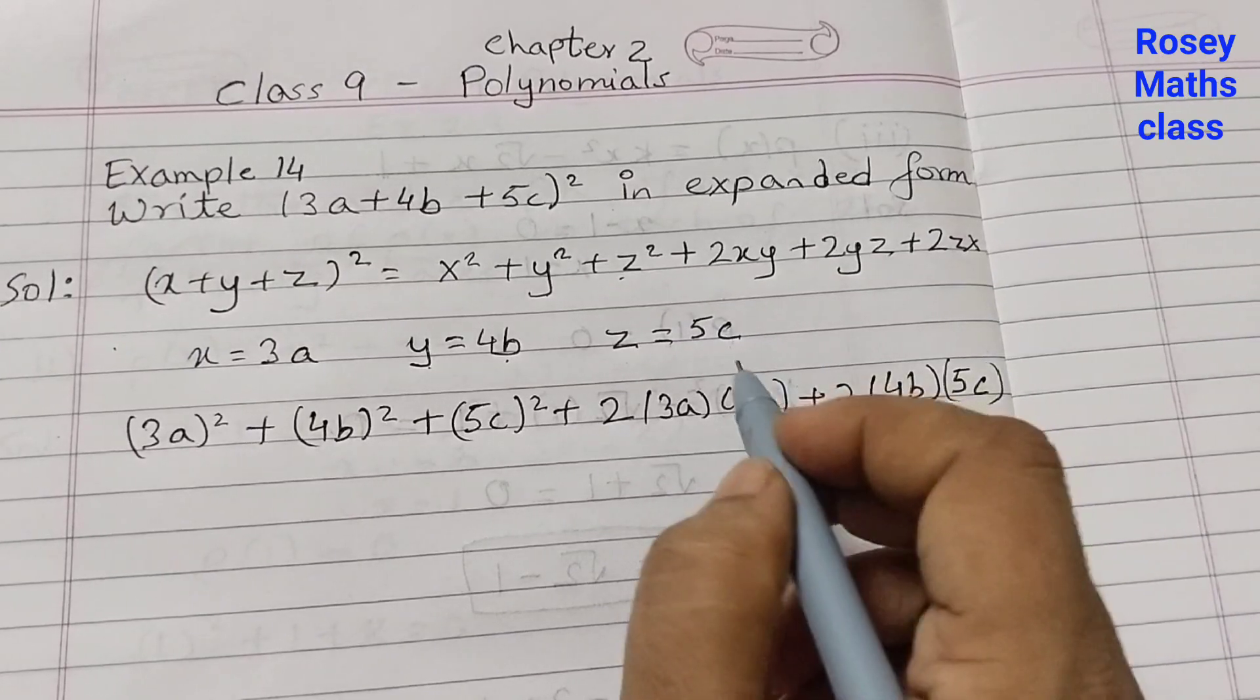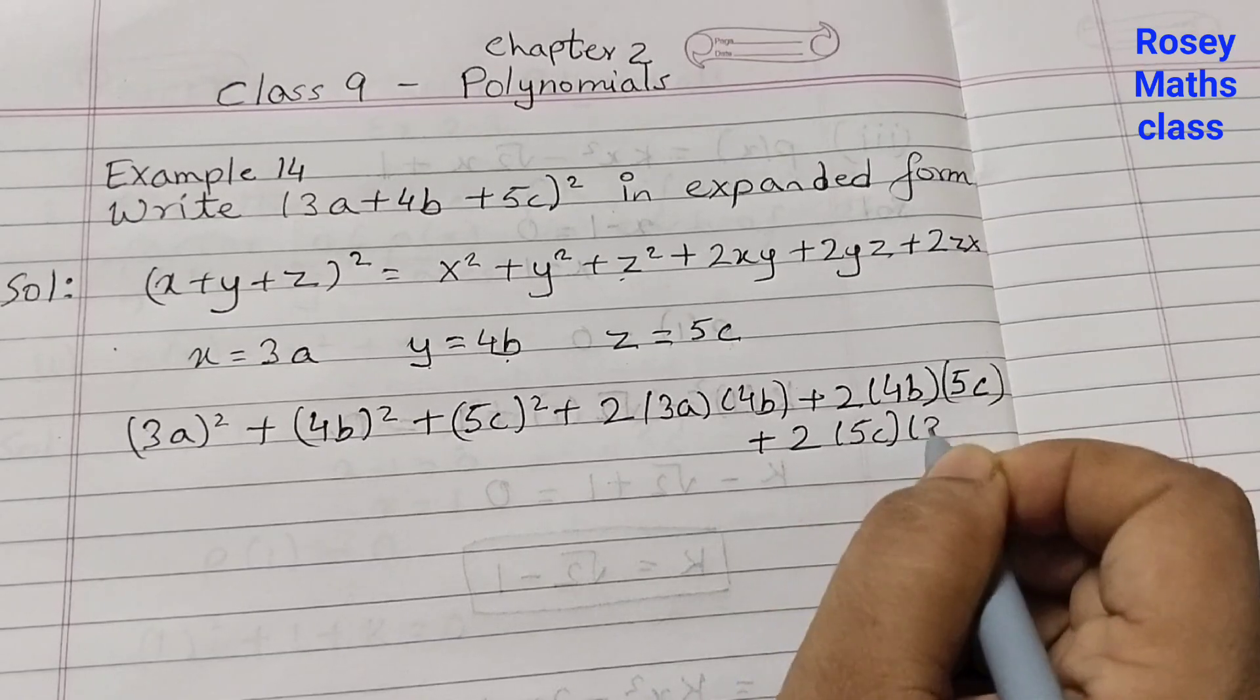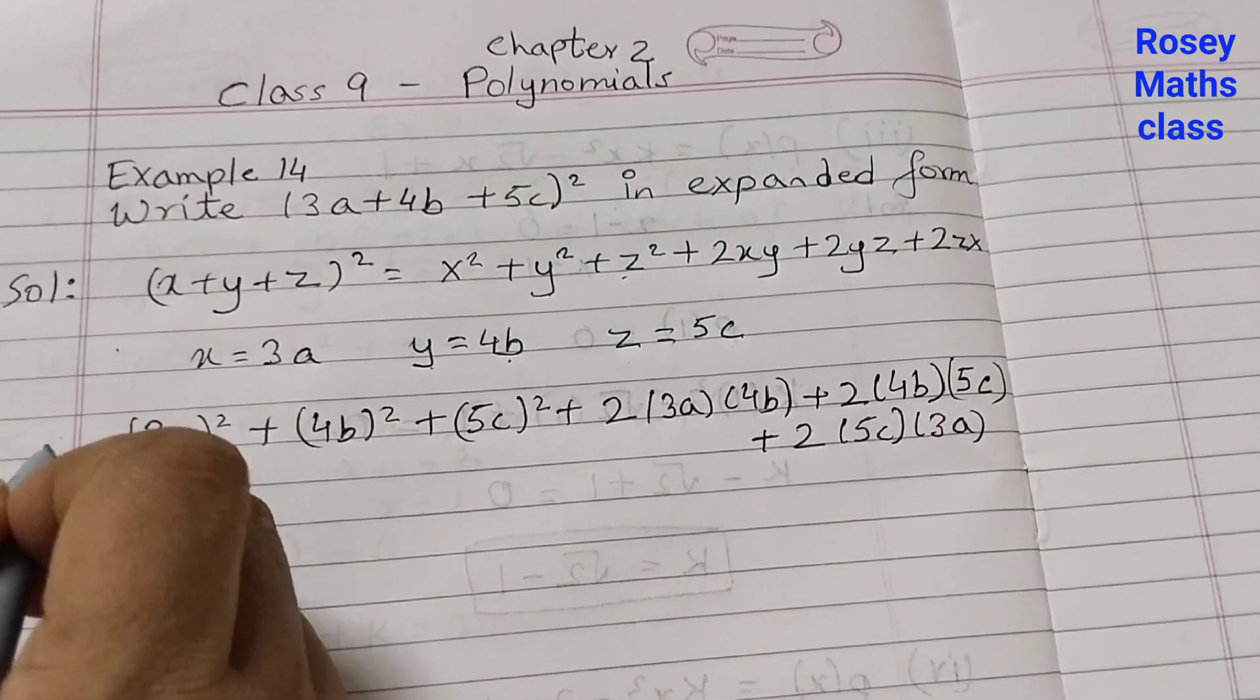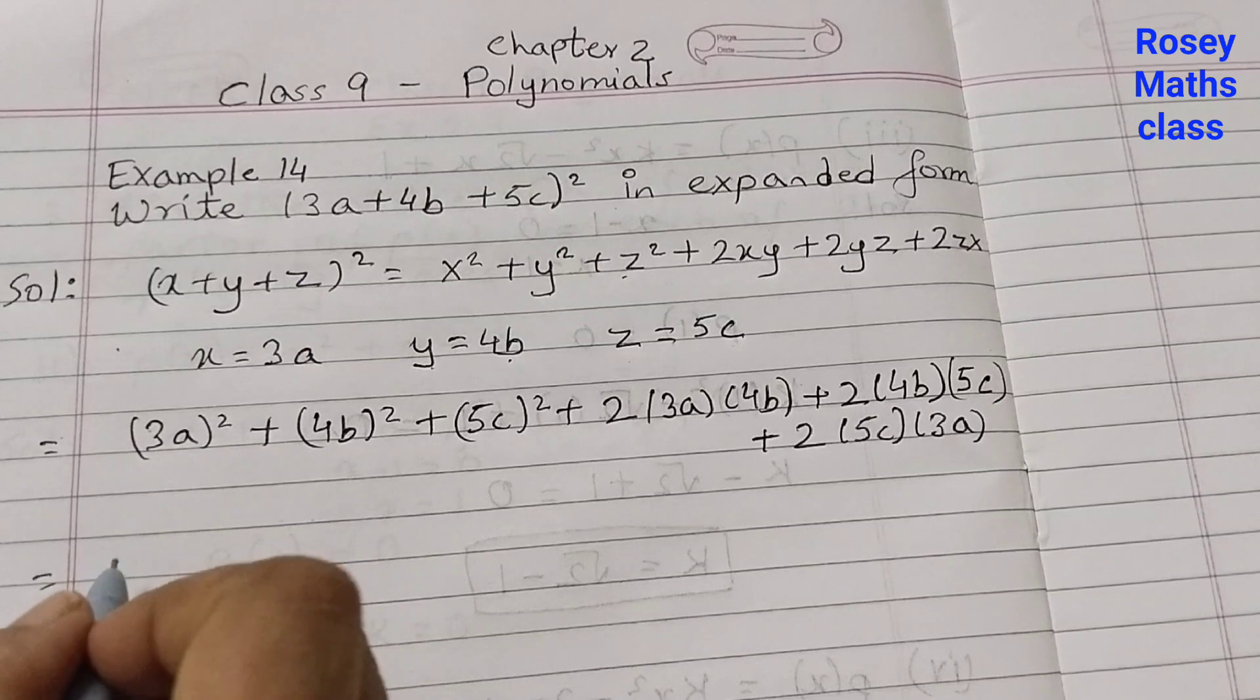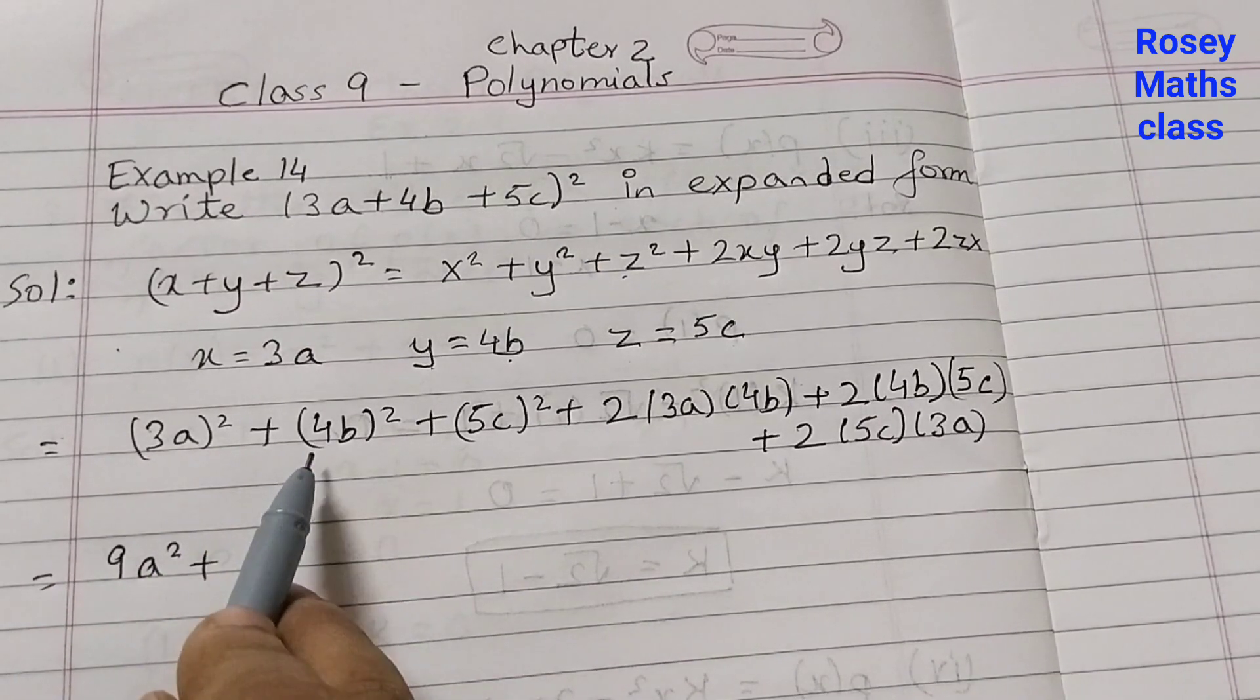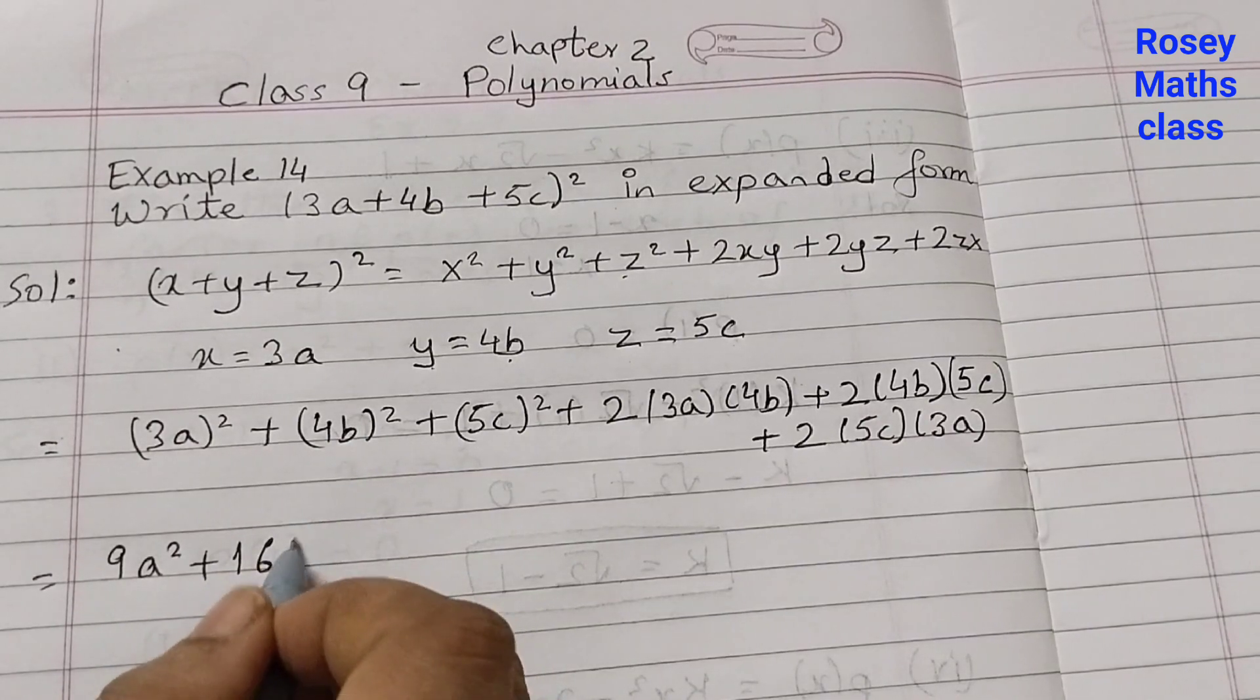Now we need to simplify this. 3 into 3 is 9, a into a is a², so 9a². Plus 4² is 16, b into b is b², so 16b². Plus 5² is 25, c into c is c², so 25c².